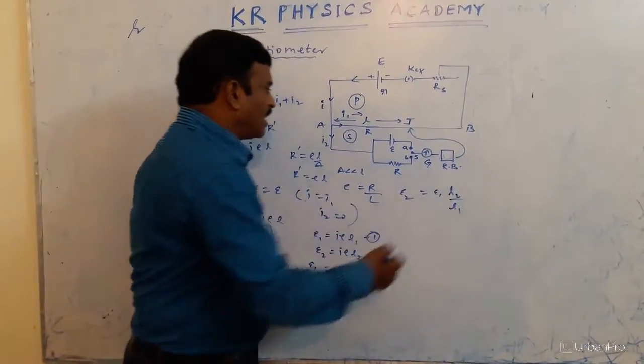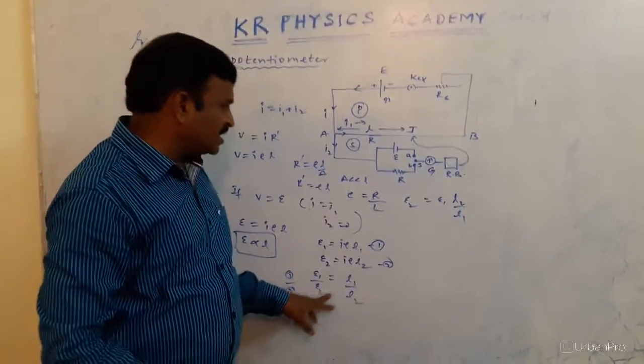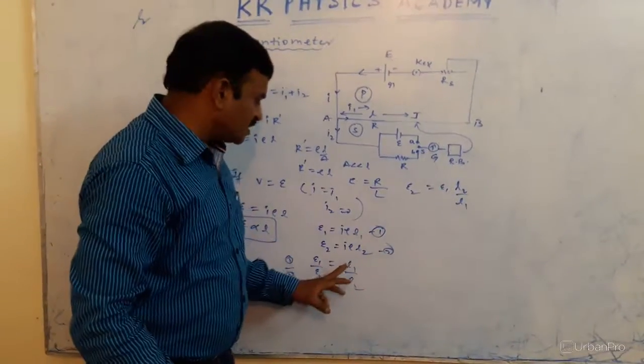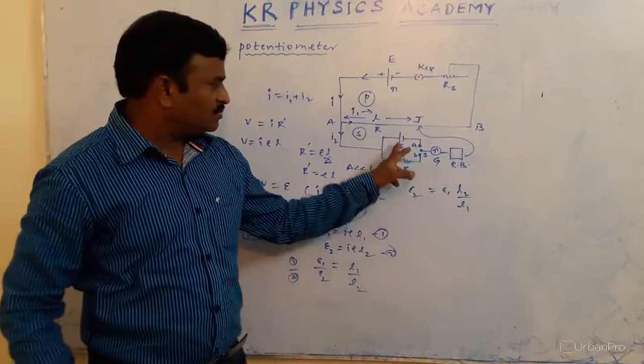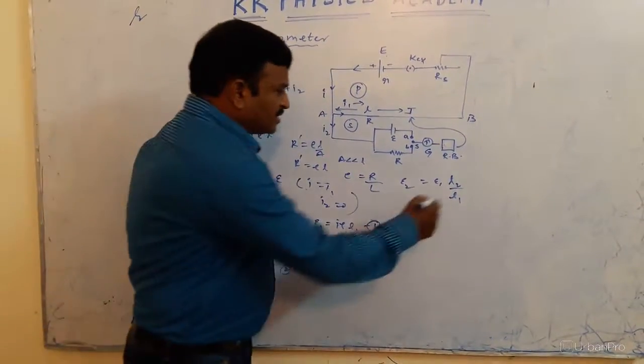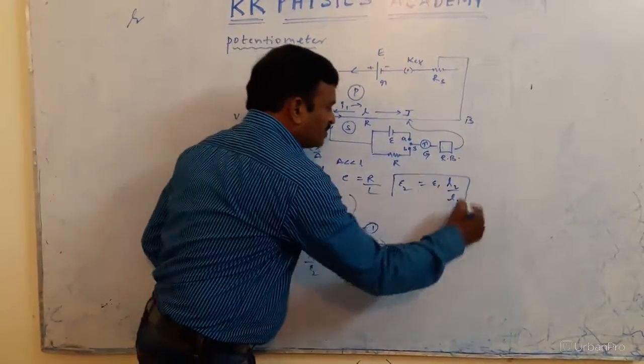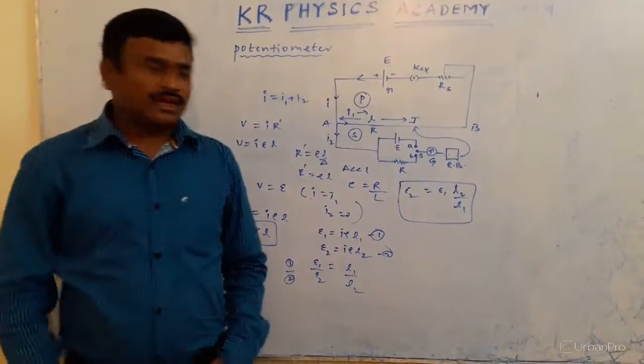E1 is known, L2 is the balancing length when secondary cell is placed, L1 is the balancing length when known cell is placed over here. Then, by substituting these values, EMF of the secondary cell, unknown cell, can be determined.